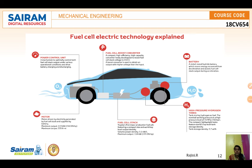The diagram explains the fuel cell electric technology used for a car. It acts like a boost converter because the stack voltage is 650 volts, and the boost converter is used to obtain an output with a higher voltage than the input.